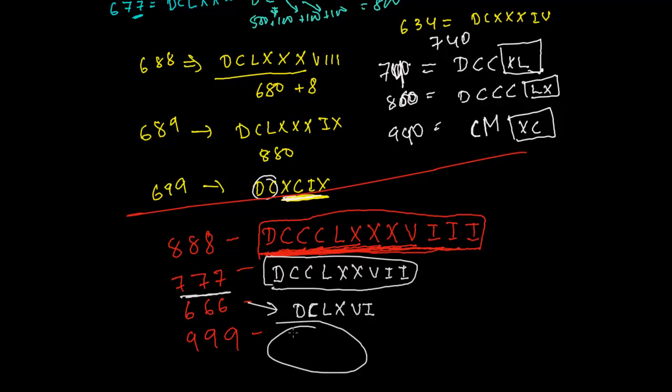999. Will you do this or I'll do? I'm going to do it. For 900, I write CM. And 99 I'm going to put in this box. In this box, what I need to put? 99, which is XCIX. C is 100 minus 10 is 90, then 9 is IX. If I'm removing this box, I'll get my 999. CMXCIX is 999.